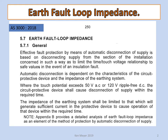Let's set the context of Earth Fault Loop Impedance. This is directly from AS3018, Rule 5.7.1 General. The effective fault protection by means of automatic disconnection of the supply is based on disconnecting the supply from a section of the installation concerned in such a way as to limit the time and touch voltage — sometimes we say touch potential — relationship to safe values in the event of an insulation fault. That's the breakdown of the insulation between the active conductors and the protective Earth. Automatic disconnection is dependent on the characteristics of the protective device and the impedance of the earthing system.